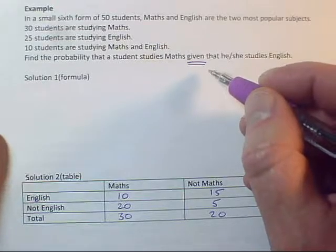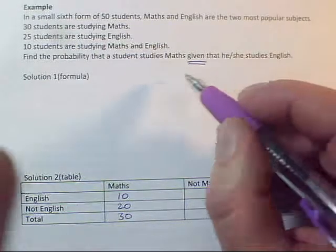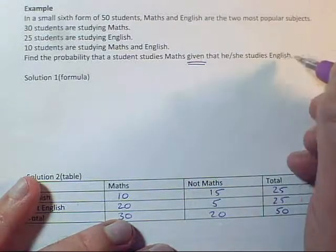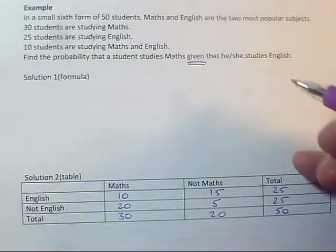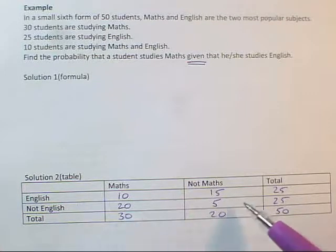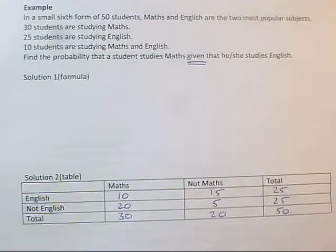It doesn't have to use the word given, but often it does. What this means is that we're not interested in all the students. We know that the student who has picked studies English. So in terms of the table, it means that this not English row of the table I could completely ignore.